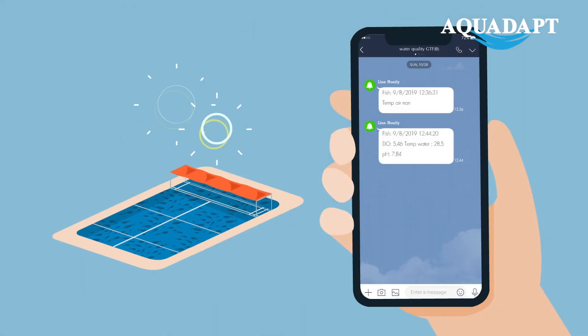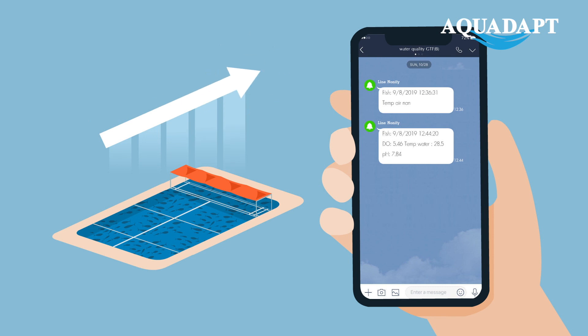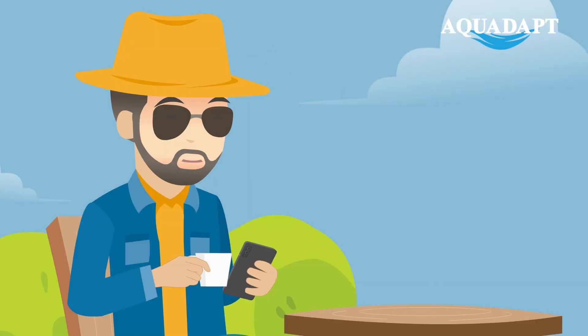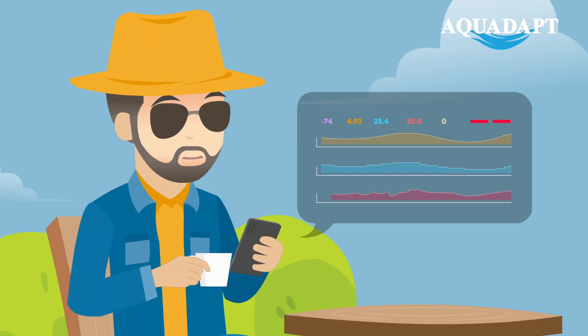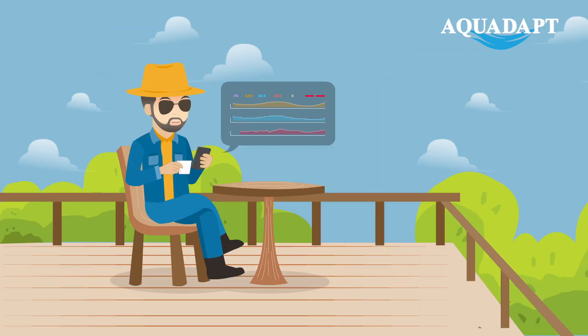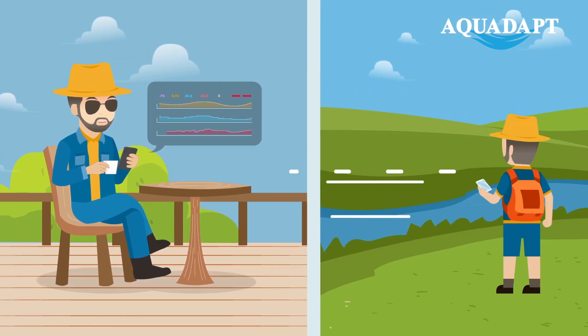Alternatively, the farmer can override and manage things manually on their smartphone.